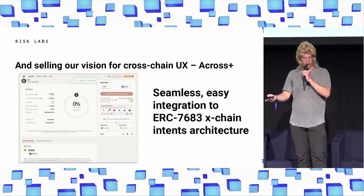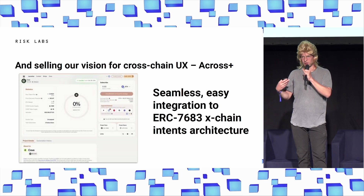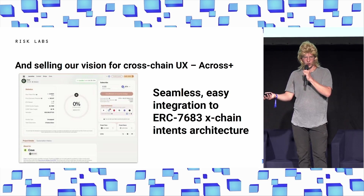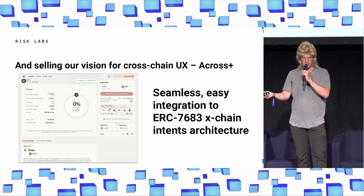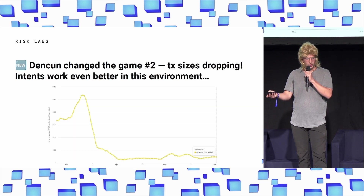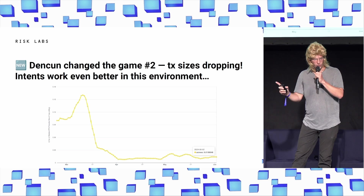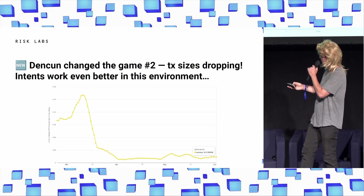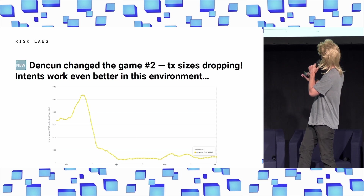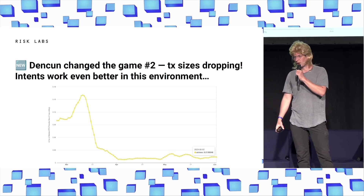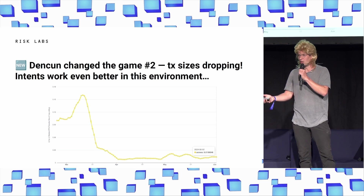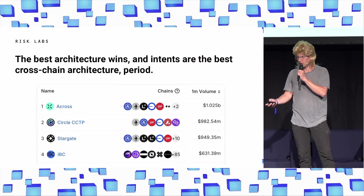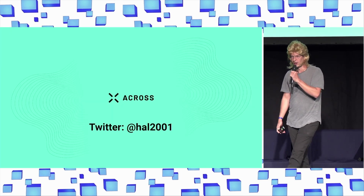We're bringing intents to new chains. We also have Across+ — using the same ERC-7683 intent standard but allowing you to execute code on the destination chain, so you could bridge and buy an NFT or bridge and deposit into Aave or Morpho. One last thing: Dencun has changed the game. Dencun lowered costs so much that the median size of an L2-to-L2 bridge transaction was around $500 before March 15th when Dencun came out, and it's dropped by a full order of magnitude — the median L2-to-L2 bridge size is now $50. We're actually seeing consumer applications with people using L2s to do real things, which is super cool. Thank you guys very much.